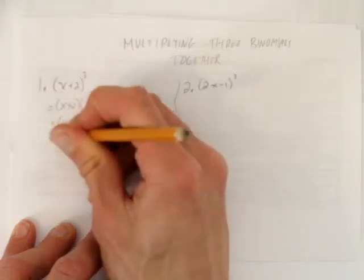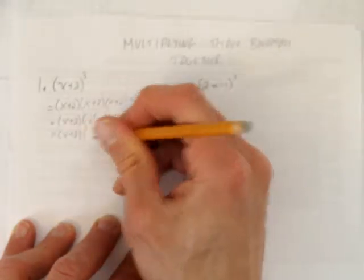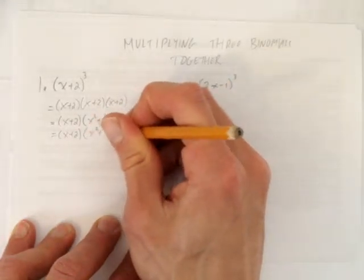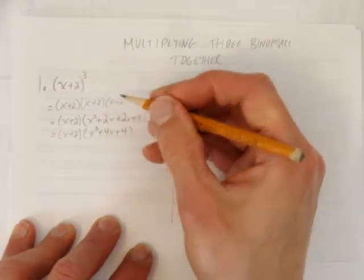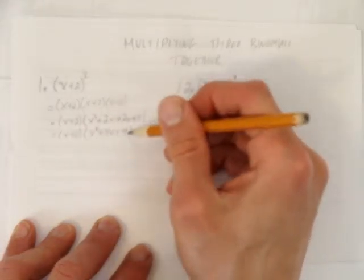I also can simplify. That is, I'll leave my x plus 2, but in that second bracket, 2x plus 2x is 4x. So, so far, all I've done is multiply these x plus 2s together to get x squared plus 4x plus 4.